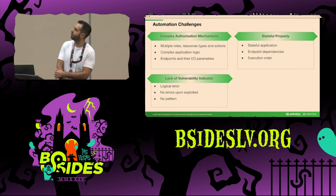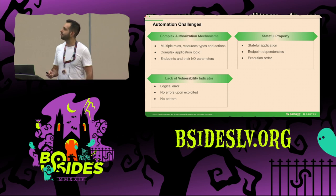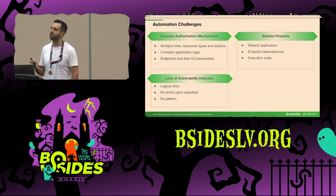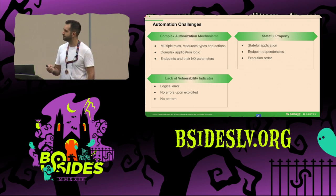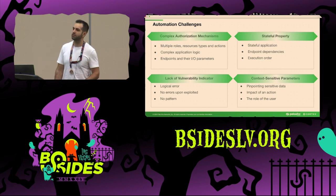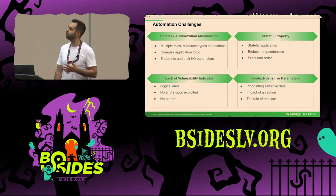There is also a problem of lack of vulnerability indicators. XSS and SQL injection all have a pattern — we know how to recognize them quickly. But BOLA is a logical error; it doesn't have a clear pattern, making it really difficult to identify. Lastly, the context of the application: it was difficult to understand exactly which endpoints or parameters return sensitive data and what the actual impact of each action is. All of this made automating BOLA detection at scale a real challenge.